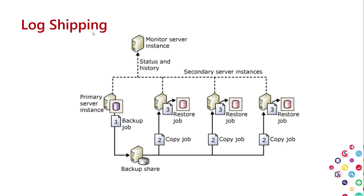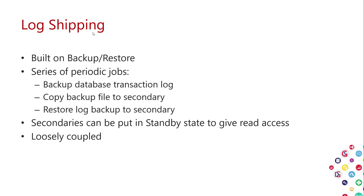Say every 15 minutes, the primary server does a transaction log backup. That backup gets copied to each secondary node, which applies it — now each secondary is up to date to where the primary was when that backup was taken, which by now is a minute or two in the past. It's a way to keep multiple secondaries online with a small RPO. Secondaries can also be put in standby state to allow read access for offloading reporting. It's a very loosely coupled system.